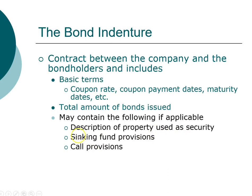Sinking fund provision protects investors. In theory, a company does not have to pay off its face value until the maturity date, but that represents a large amount of money and investors may be worried the firm may not have enough money. In a sinking fund provision, the company is forced to set aside a little bit of money each year so that on the maturity date they would have saved up a significant portion of the face value they need to repay investors.